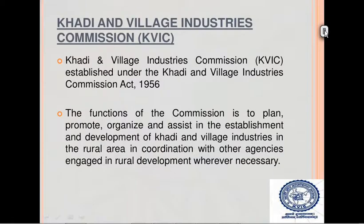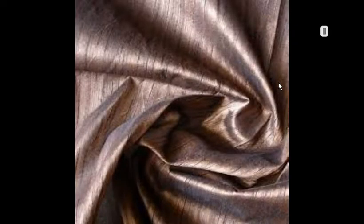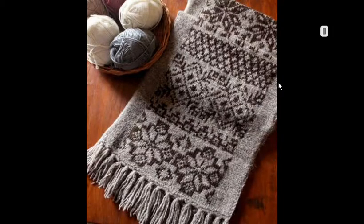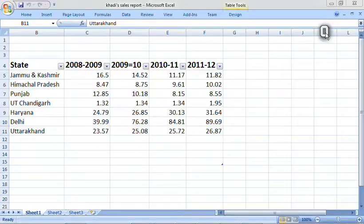Khadi and Village Industries Commission was established under the Khadi and Village Industries Commission Act 1956. There are five types of Khadi fabric: cotton Khadi, Khadi silk, Khadi wool, Khadi muslin, and poly Khadi. Here is the statewide Khadi sales report.